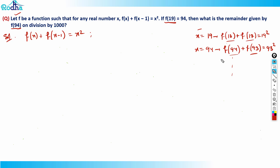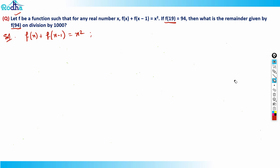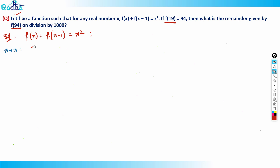The best way to handle such questions is to bring in a minus sign — some subtraction. To do that, I'll replace x with (x-1) in the original equation. This gives a second equation: f(x-1) + f(x-2) = (x-1)².